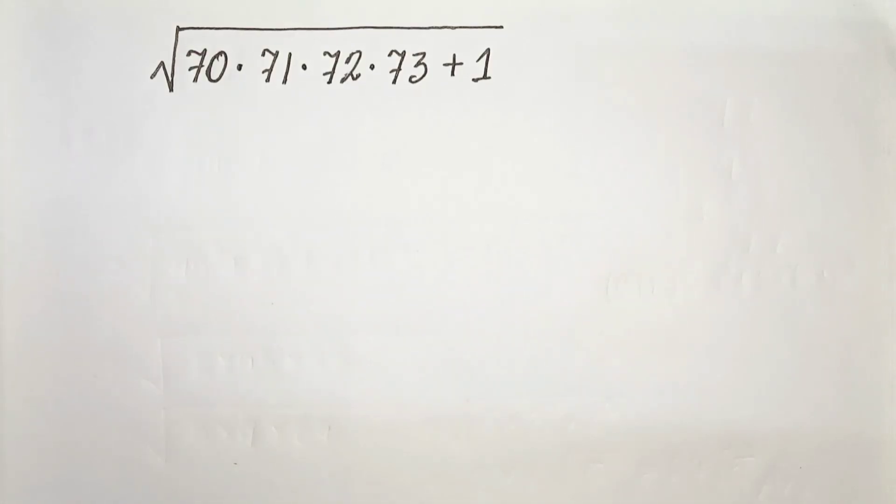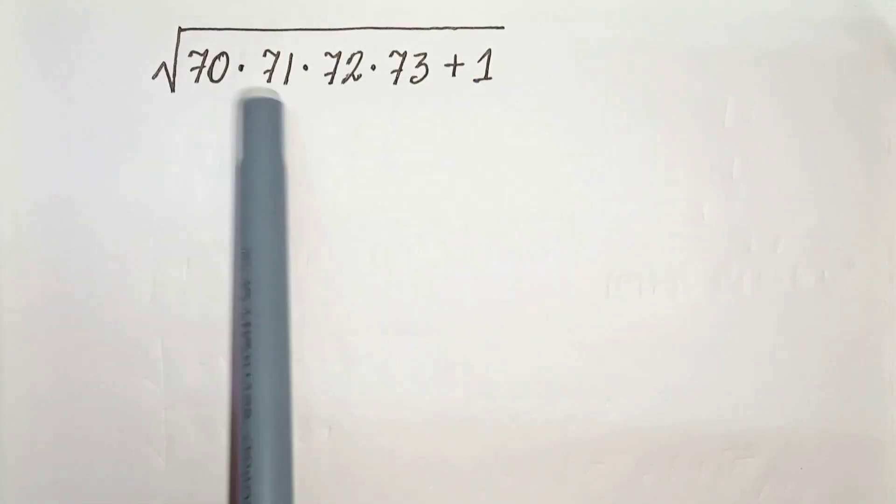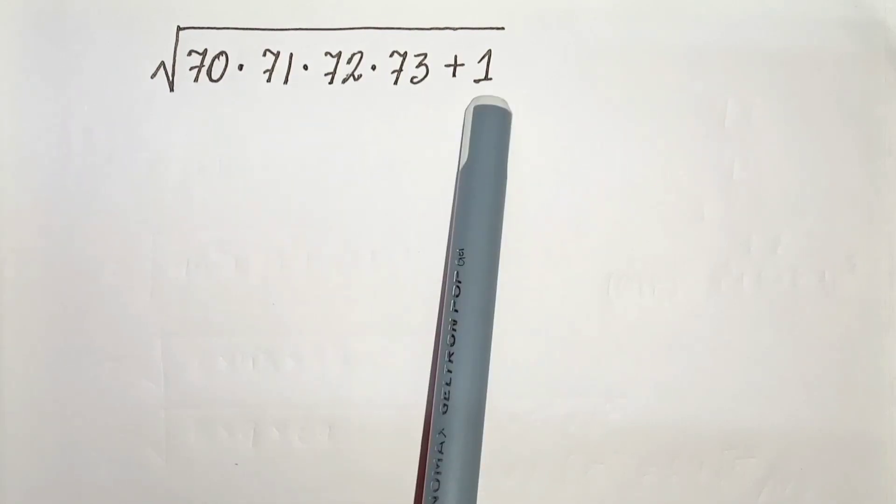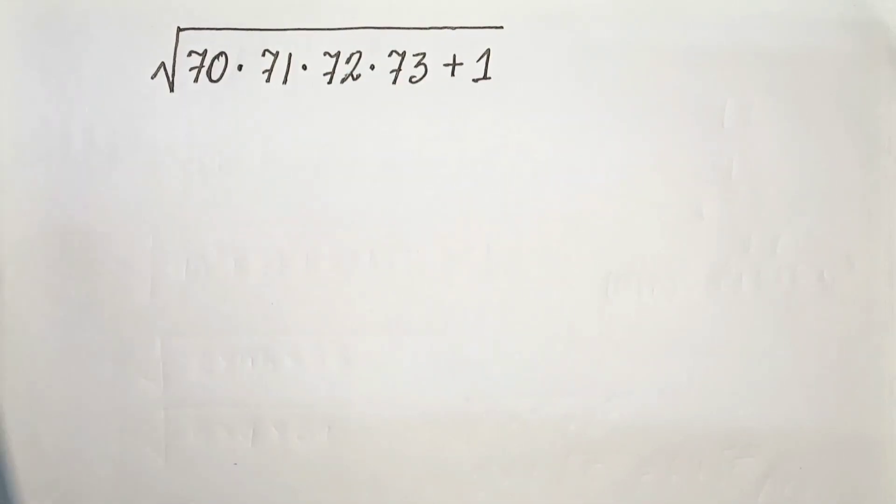Hello everyone, in this video we have root under 70 times 71 times 72 times 73 plus 1. We have to find the value of this. So let's start.